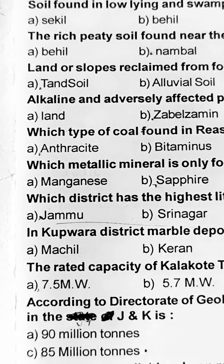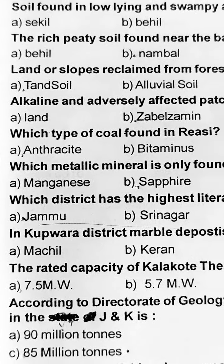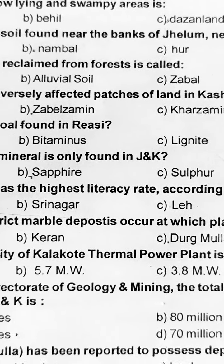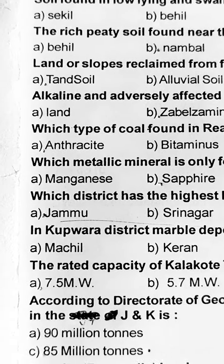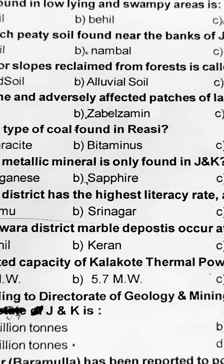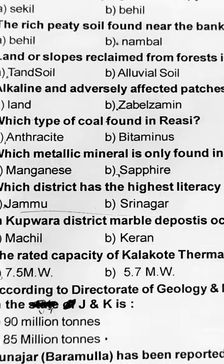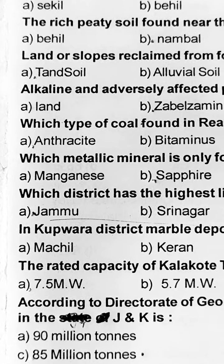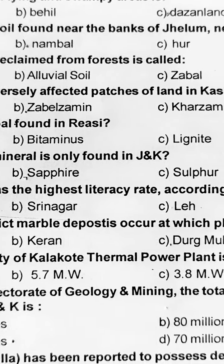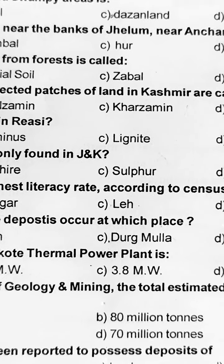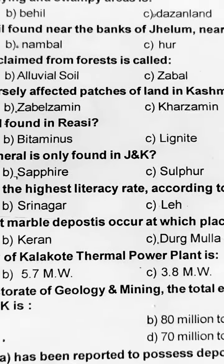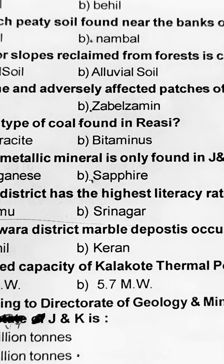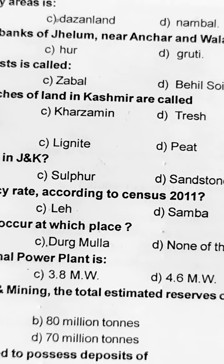Tisra question: land or slopes reclaimed from forests is called — good and soil. Next question: alkaline and adversely affected patches of land in Kashmir are called? Usko Zabul Zameen kehte hain, B part. Option A hai Double Zameen.